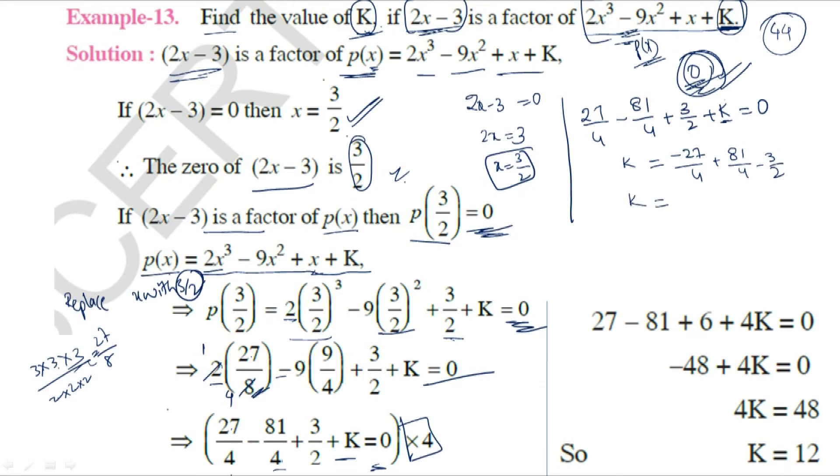Next, to find K, we need a common denominator. The LCM of 4 and 2 is 4.